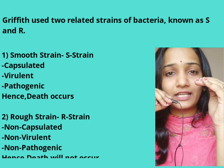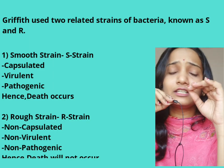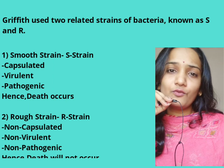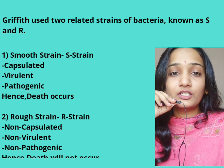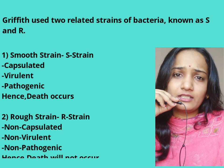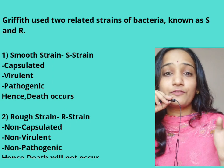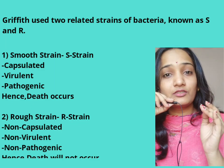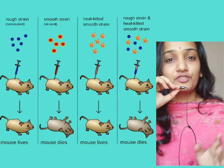The S strain bacteria are covered with a polysaccharide covering, because of which it is not possible for the host to kill that bacteria. So because of S strain, death may occur, and because of R strain, the mammal should remain alive. So we have conducted this experiment on mice by injecting bacteria.